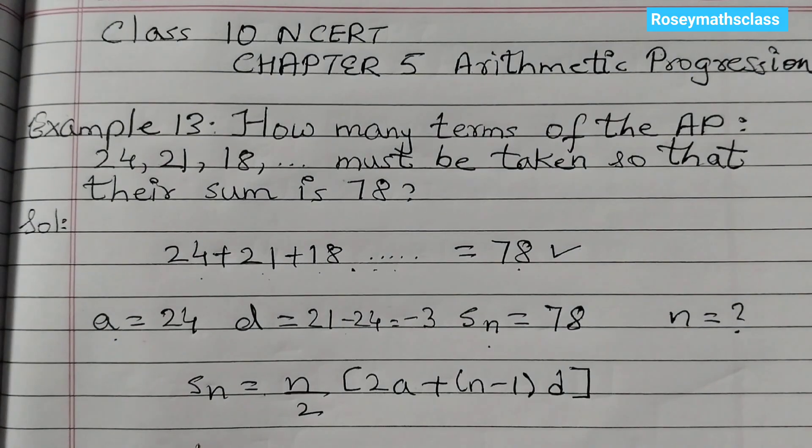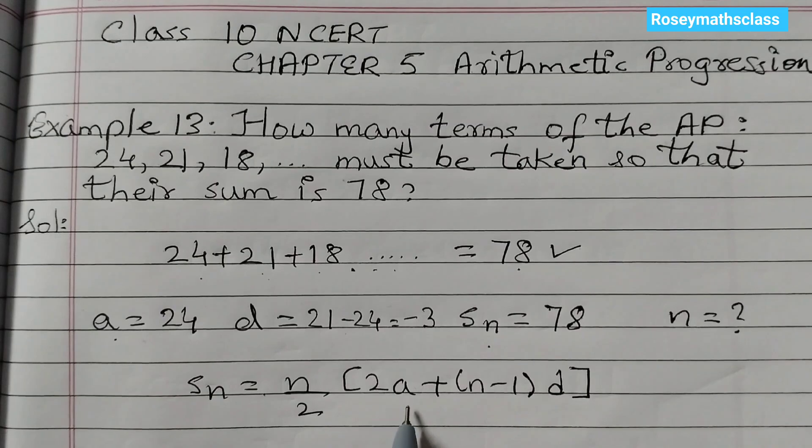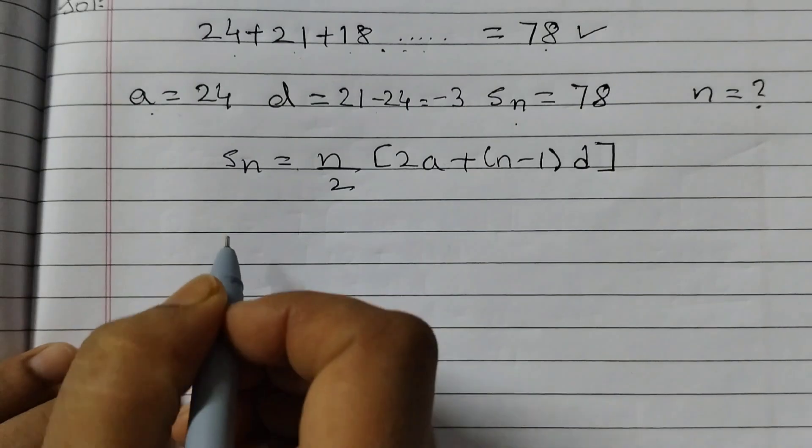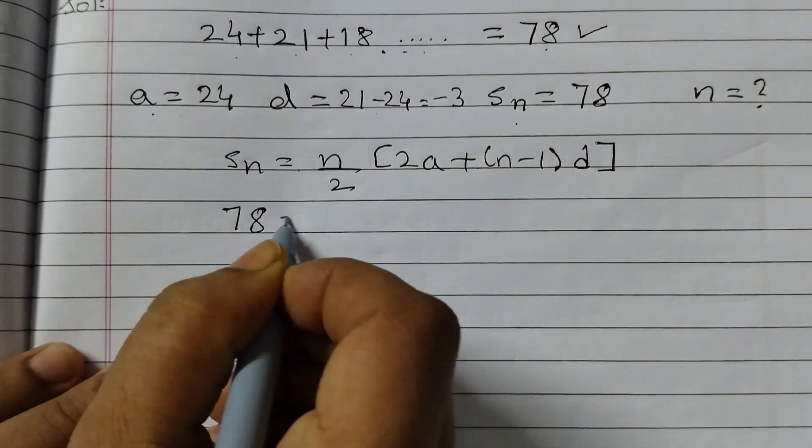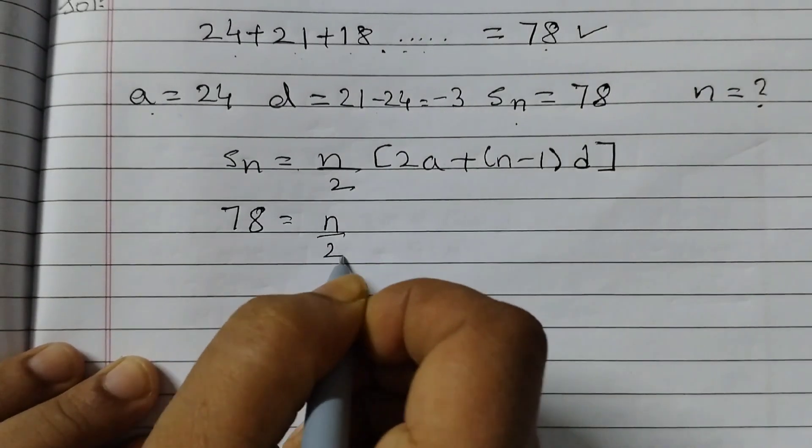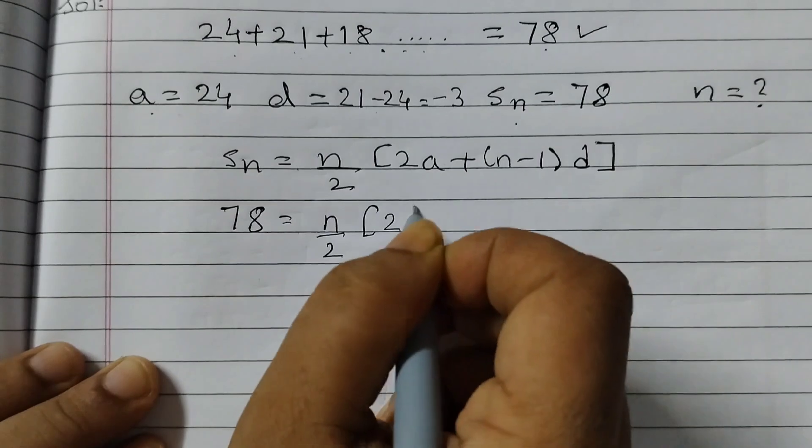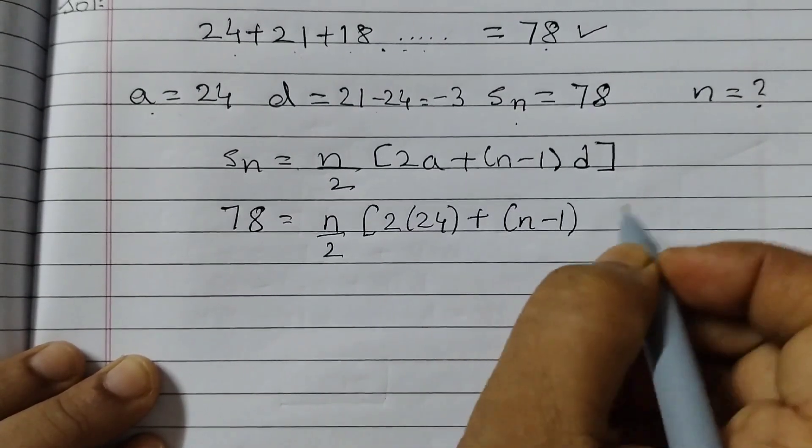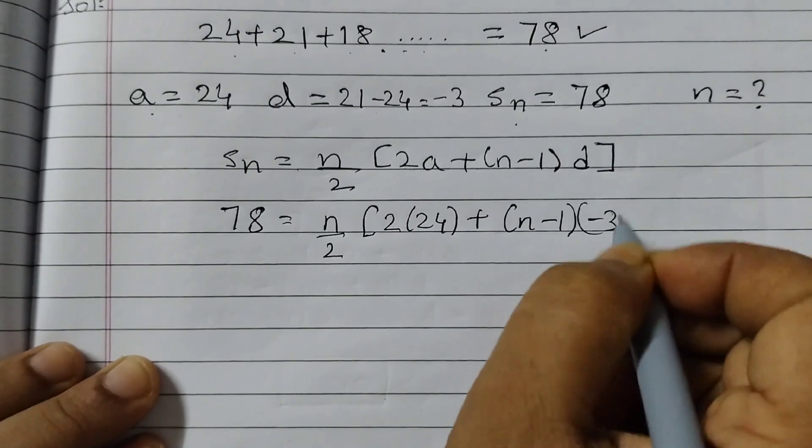For this we will use the formula of sum Sn is equal to n by 2 into 2A plus n minus 1D. Now substitute these values here. Sn is 78 equals to n by 2, 2A is 24 plus n minus 1, D is minus 3.